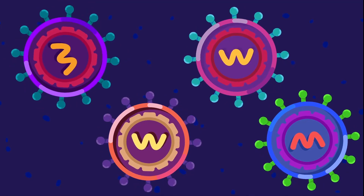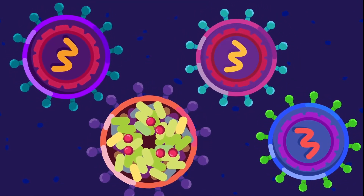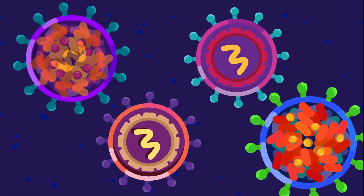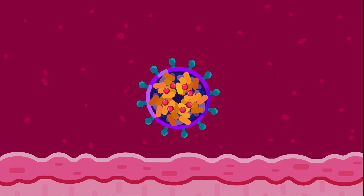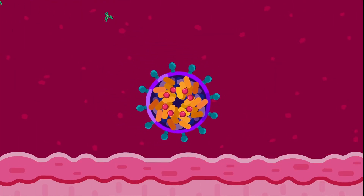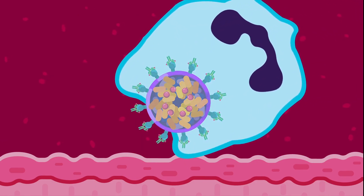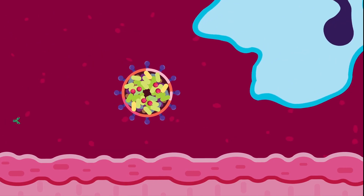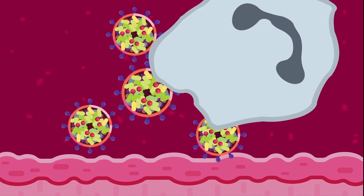The four serotypes are Dengue virus 1, Dengue virus 2, Dengue virus 3, and Dengue virus 4. It is important to have knowledge of these serotypes because recovery from a dengue infection will provide lifelong immunity against that serotype only. Subsequent infections from other serotypes will increase the risk of developing severe disease.